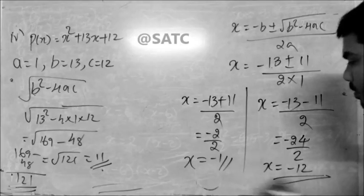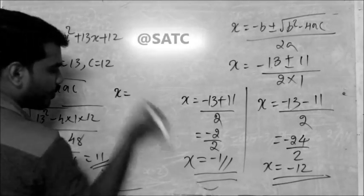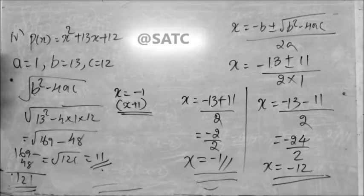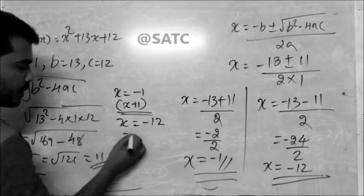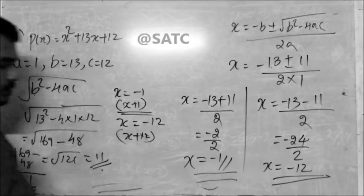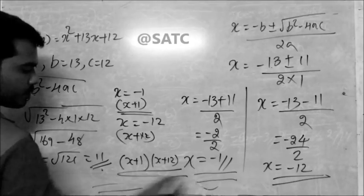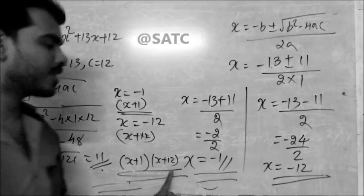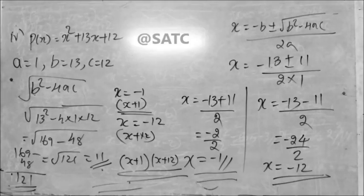X is equal to minus 1. X is equal to minus 12. Minus 12, minus 12, x plus 12. X plus 11, x plus 12. So you can see that x plus 12.